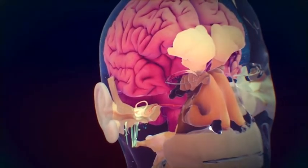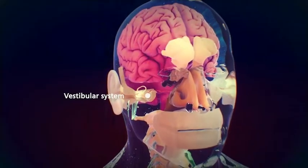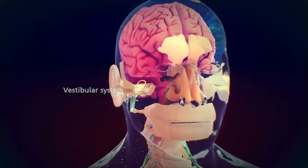Components of the inner ear, called the vestibular system, gather information about the position and movement of the head to maintain balance.